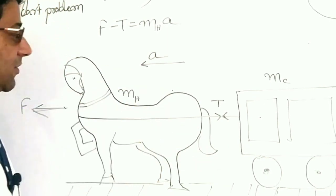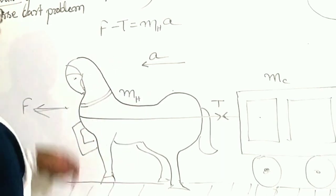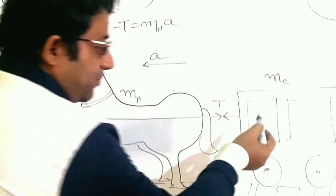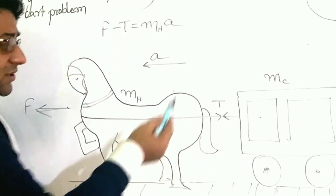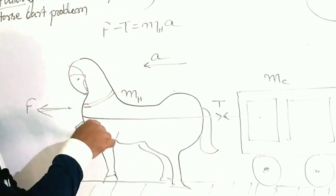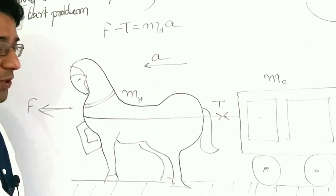So the simple explanation is: the cart can move because the cart experiences the pull, but the pulling of the horse by the cart is experienced by the horse. So there is only one force on the cart.